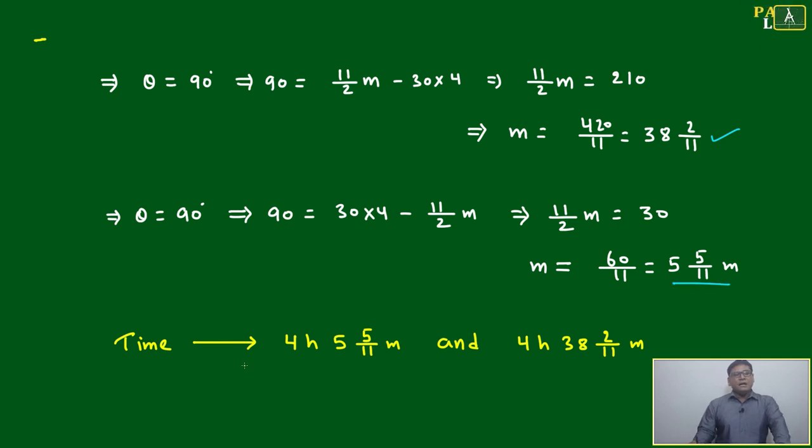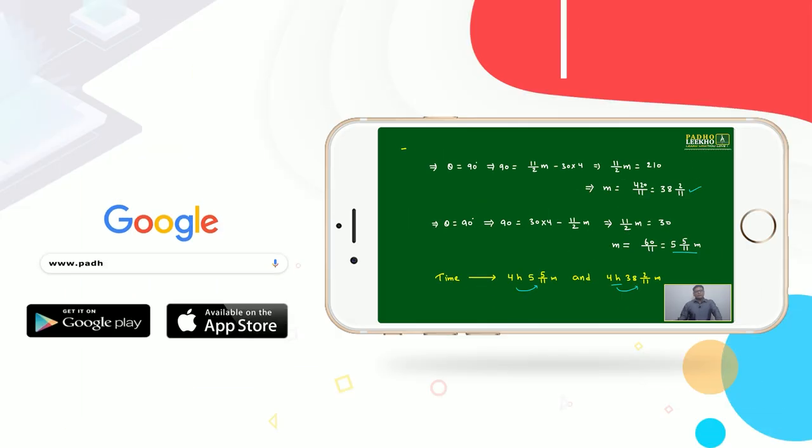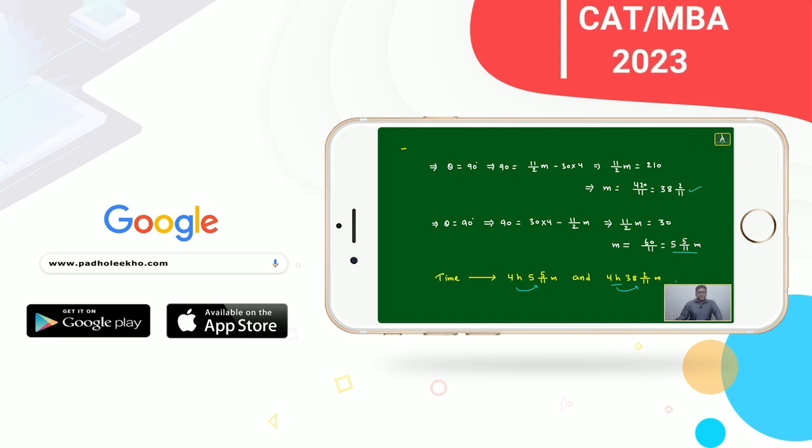Means the time is 4 hours 5 minutes and 5 into 5 by 11 minutes, and 4 hours 38 into 2 by 11 minutes. Both times, the minute hand and hour hand will show 90 degrees to each other.